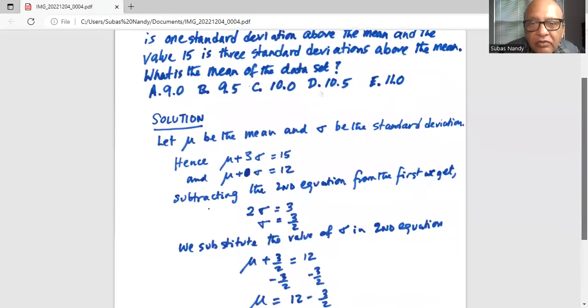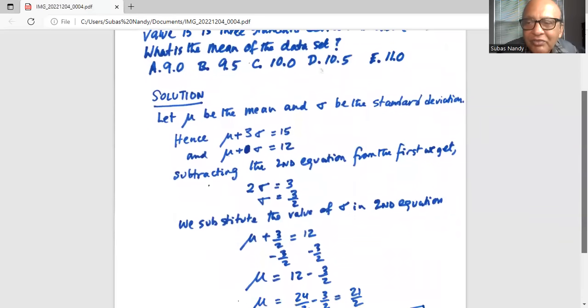Hence the correct answer is option D, which is 10.5.